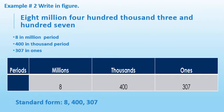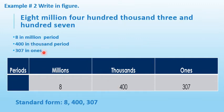Example two: write in figures — eight million, four hundred thousand, three hundred and seven. Place the digits in the place value chart starting with eight in the millions period, four hundred in the thousands period, and three hundred seven in the ones period. The standard form is: 8,400,307.